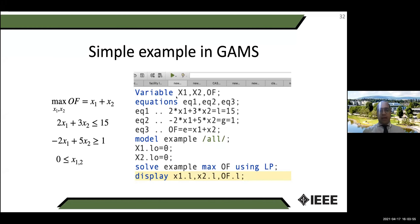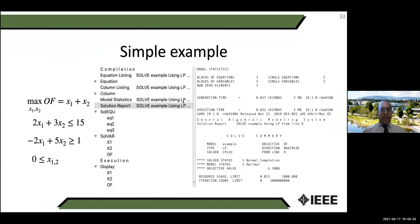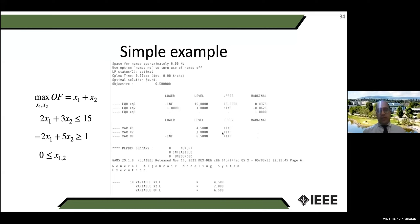If you want to solve the same problem in GAMS, you define variables X1 and X2, name the equations OF, EQ1, EQ2, EQ3, include them in the model, define lower bounds, and solve. The solution shows: model status is normal, lower bound zero, upper bound infinity, optimal values X1 = 4.5, X2 = 2.0, and objective function = 6.5.